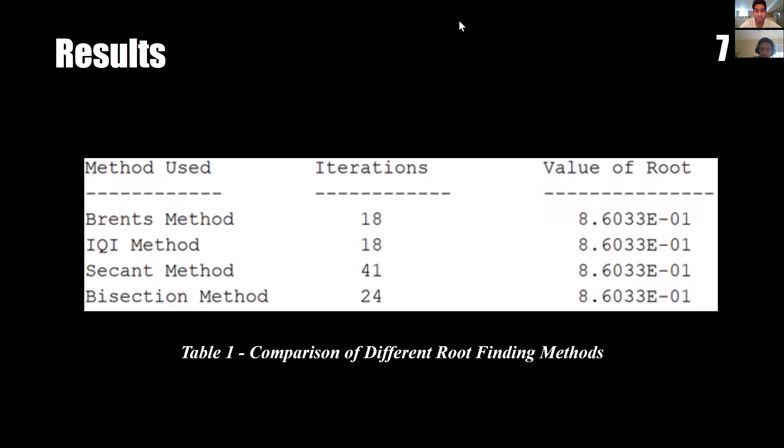This value is pretty much correct because four methods arrived at the same conclusion. However, we can also see how Brent's method was the fastest at 18 iterations, whereas the secant method took the longest with 41 iterations.